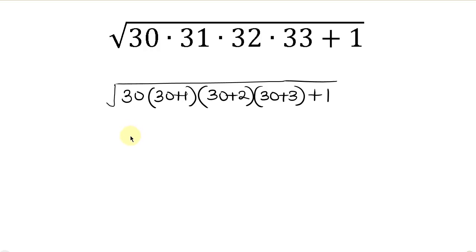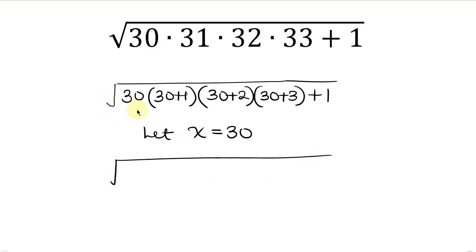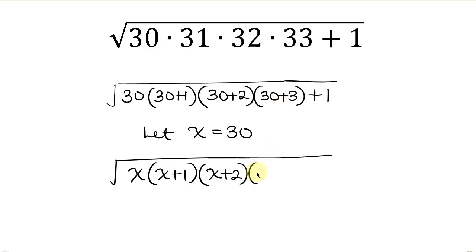Our next step will be for us to introduce substitution by saying let x be equal to 30. So that means wherever I see 30, I'm going to be putting x. So this becomes the square root of x times x plus 1 times x plus 2 times x plus 3, and then plus 1.